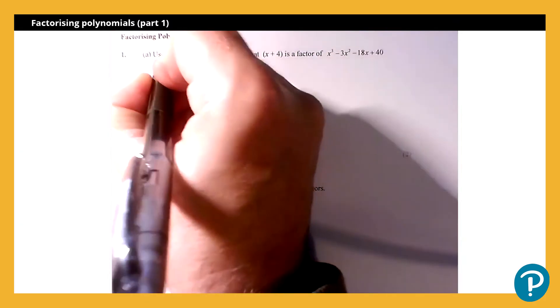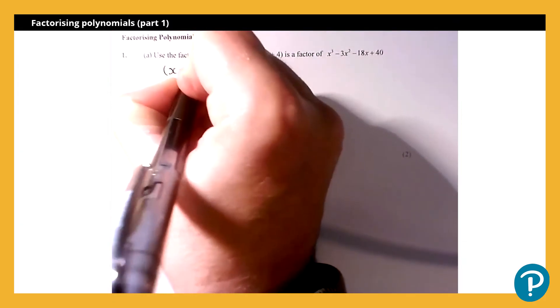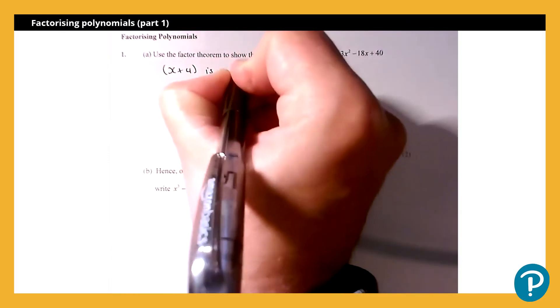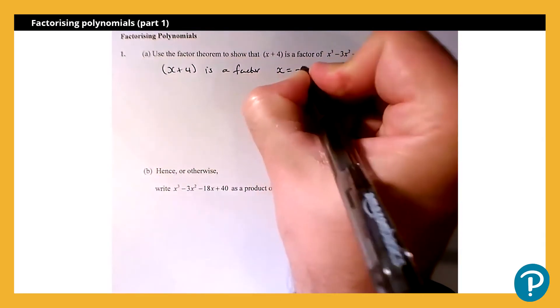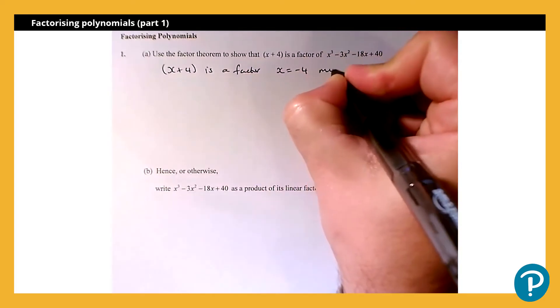The factor theorem tells me if x+4 is a factor, we know that x=-4 must be a root.